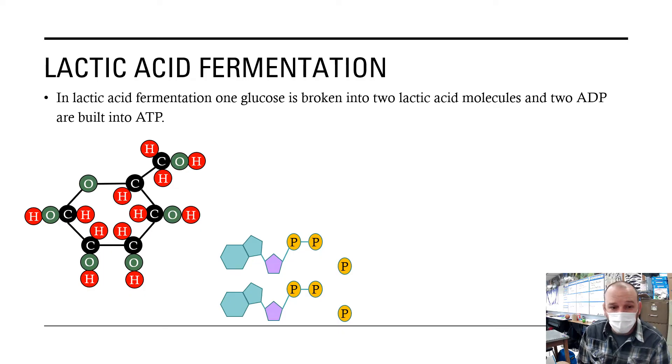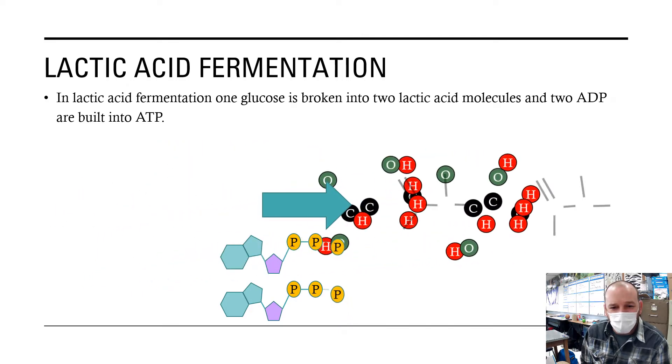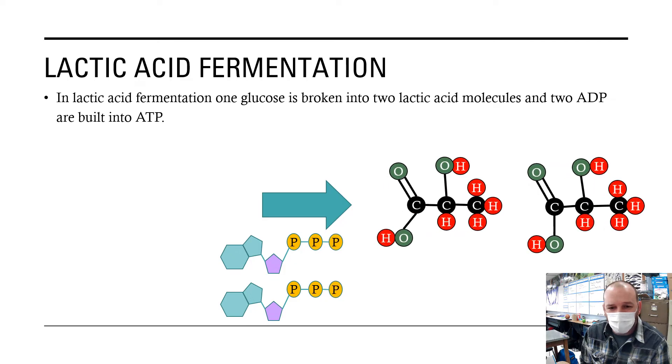Starting with a glucose molecule and two adenosine diphosphates with the extra phosphates that haven't attached yet. Through the chemical process, we attach those phosphates making adenosine triphosphate, and we're left with two lactic acids as a result.